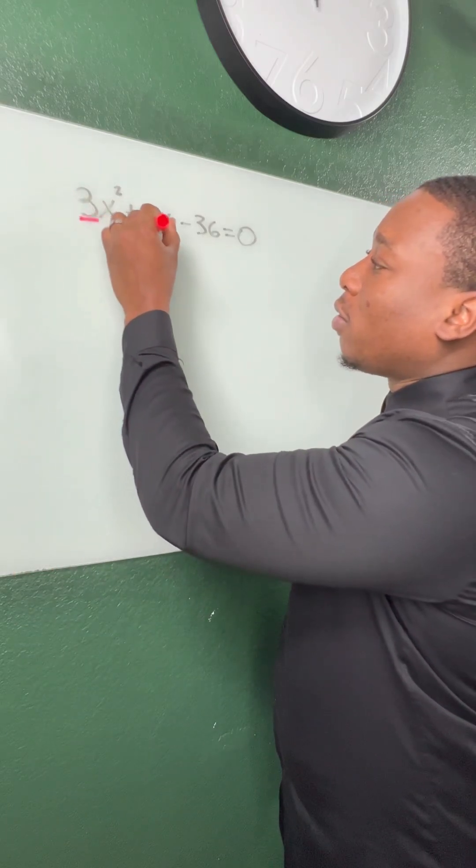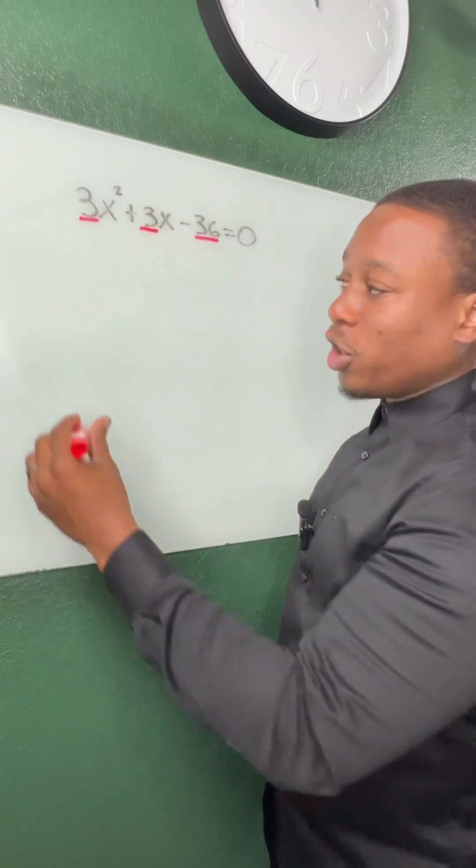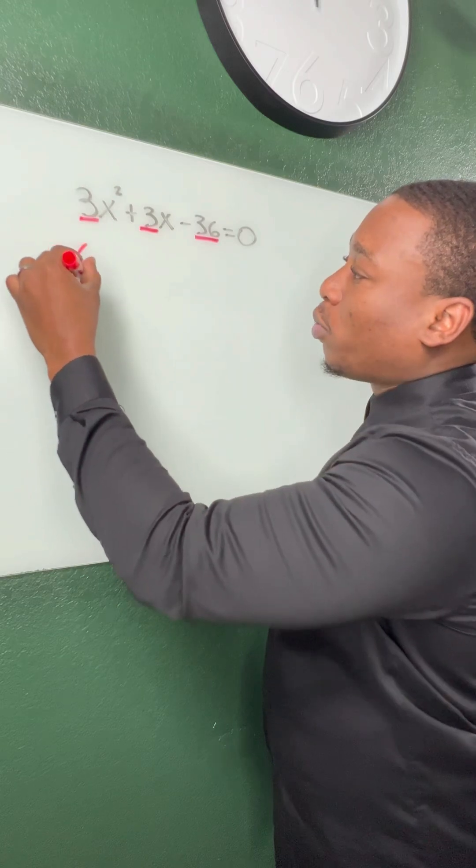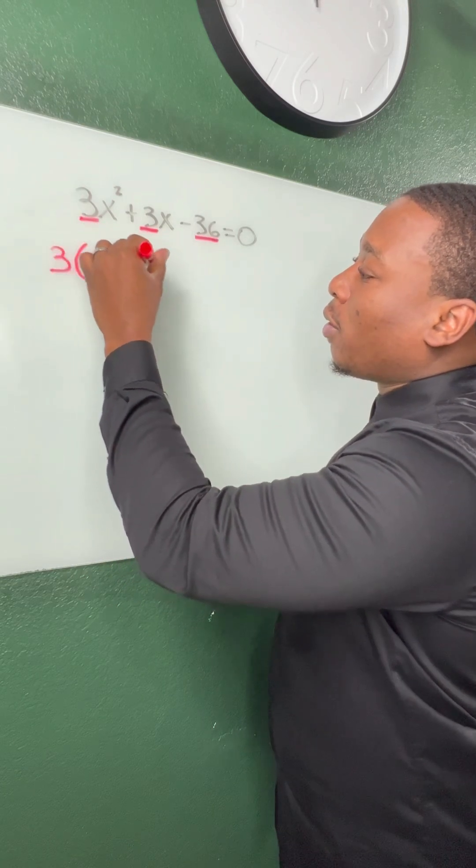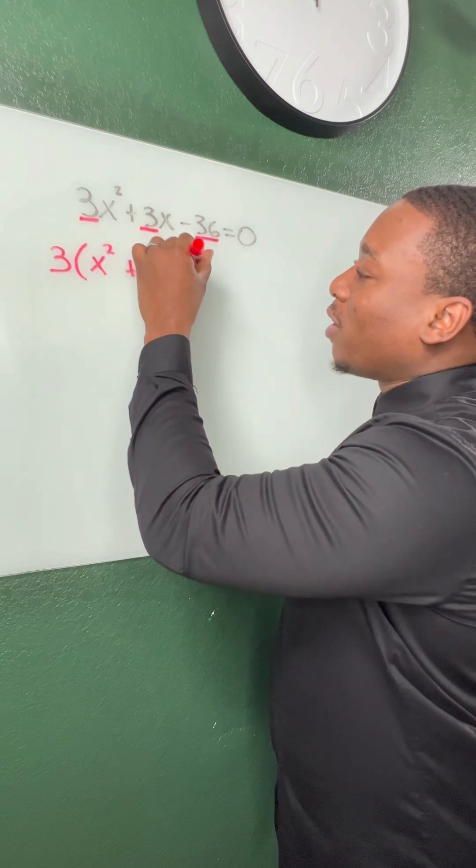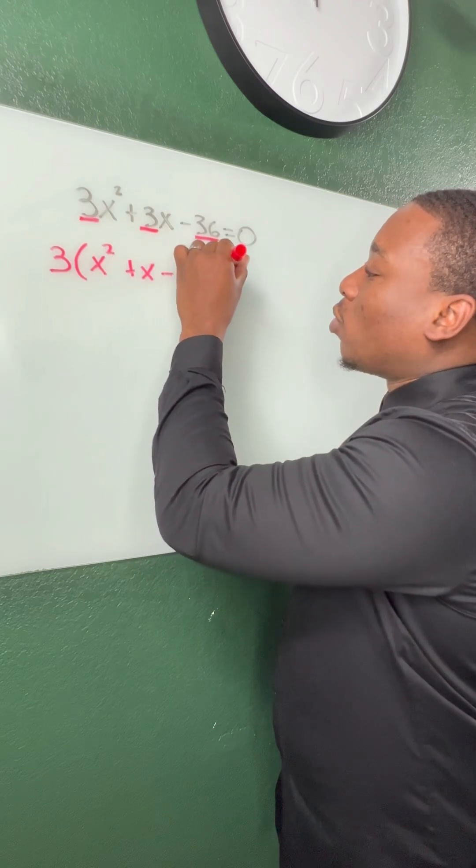If we're factoring, the best thing to do is to take out a GCF of 3. So once we pull that out, our equation is going to simplify to x squared plus x minus 12 is equal to 0.